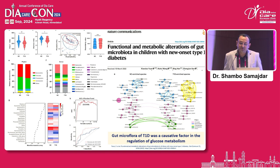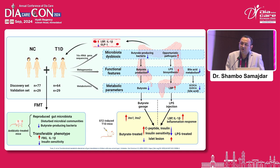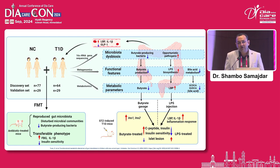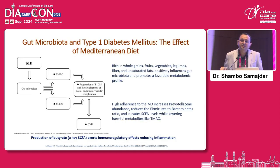A very interesting paper published in Nature Communications clearly showed that the gut microbiota of Type 1 diabetic patients was a causative factor in regulating glucose metabolism. It showed how Type 1 diabetic patients had reduced butyrate-producing bacteria and elevated lipopolysaccharide, causing endotoxemia and islet cell disruption. These microbiomes were also transplanted into rat models, inducing a similar picture as streptozotocin-induced or antibiotic-treated Type 1 diabetes models.